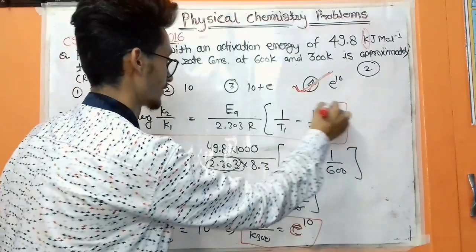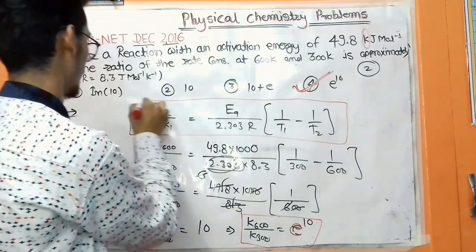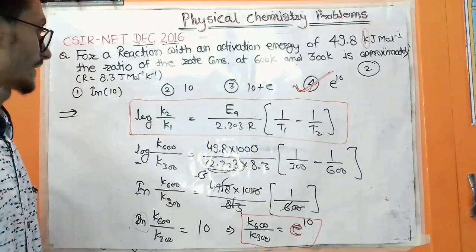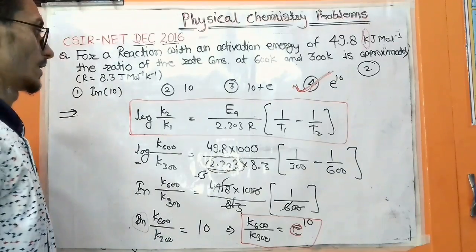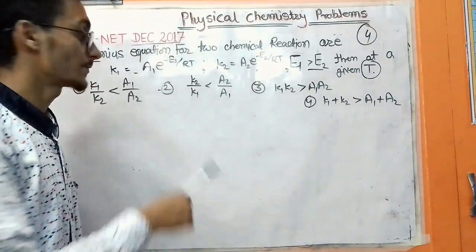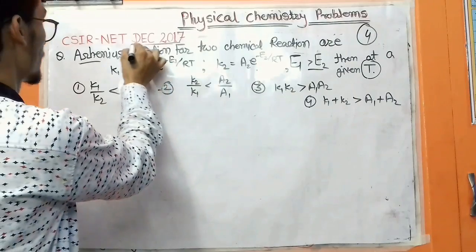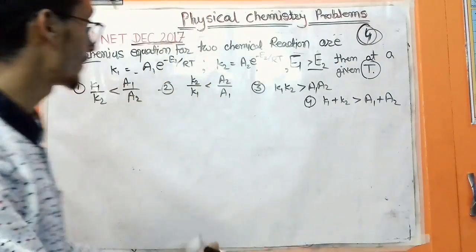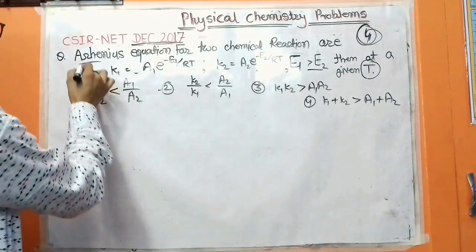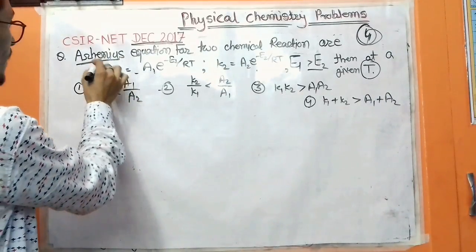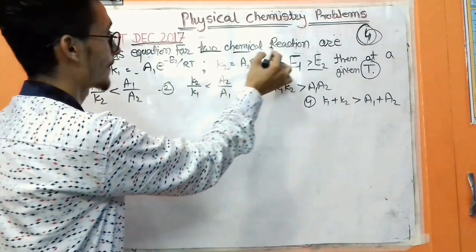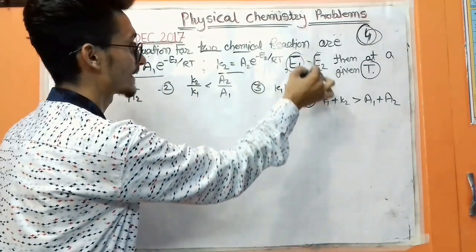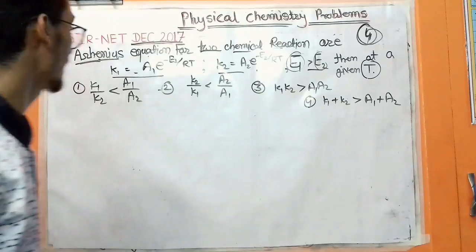Don't forget the Arrhenius equation formula — it may be repeated in the 2018 CSIR NET exam. The next problem, number three, comes from December 2017 and carries four marks. The Arrhenius equations for two chemical reactions are given, with E₁ > E₂ at temperature T, and four answer options are provided.